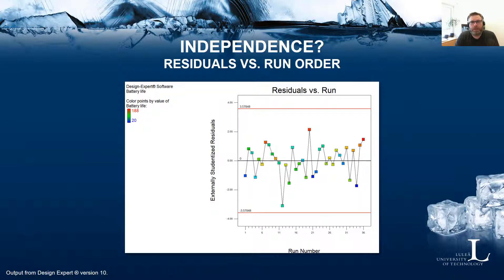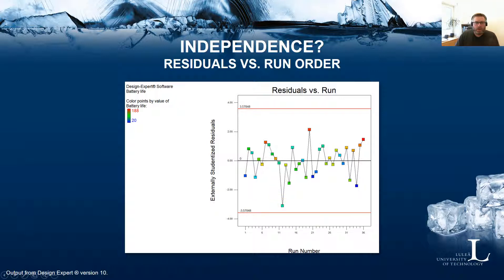Finally, we can check residuals versus run order to see that the prediction errors do not seem to be dependent on when in the design a specific run was conducted. Here it looks okay — the residuals go back and forth between plus and minus over the run order. We have again a slightly deviating residual, but it's not deviating too much. Overall, this was a brief introduction to residual analysis and model adequacy checks — more to come later in the course. Thank you for listening, bye-bye.